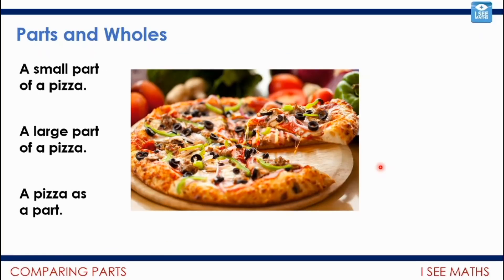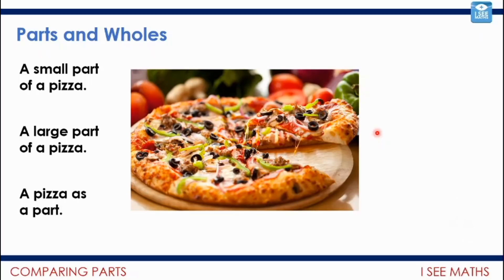Can you describe a small part of a pizza, a large part of a pizza, and a pizza as a part of something? A small part of a pizza could be the olives. A large part is probably the dough — the base is most of the pizza. And a pizza itself could be a part of a buffet meal, for example.